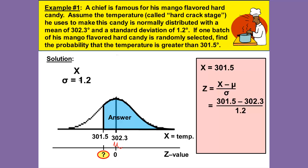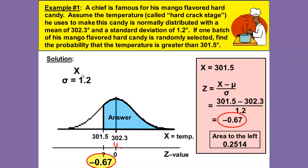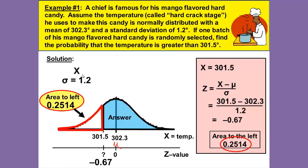That gives us Z equals 301.5 minus 302.3 for the mean divided by 1.2 for the standard deviation. Using our calculator to calculate that, that gives us negative 0.67 as our Z value. We will look that up in our standard normal chart, remembering that we use a chart that shades to the left, so the area to the left of that Z score is 0.2514 and that's the area to the left.